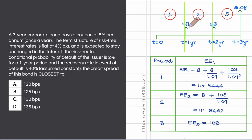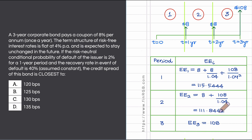Repeating the same exercise by placing yourself just before the second coupon is paid out, the expected exposure for the second time period is 111.8462. For the third time period, the expected exposure is the total amount the bond pays out, which is $108.